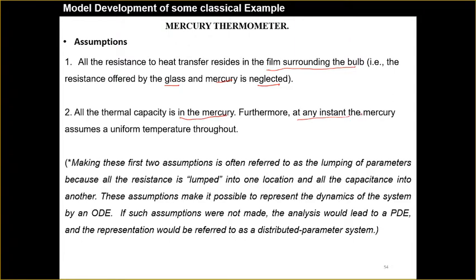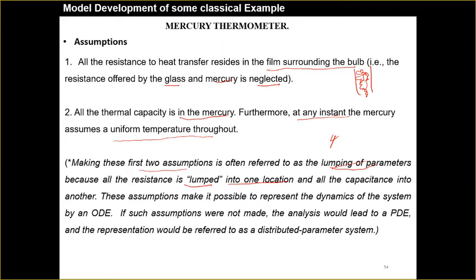Furthermore, at any instant the mercury assumes a uniform temperature throughout — meaning there is a uniform temperature distribution at every point in the volume. Making these first two assumptions is referred to as lumping of the parameters, giving a lumped parametric model, because all resistance is lumped into one location from the mercury, and all capacitance from another. These assumptions make it possible to represent the system dynamics by an ODE — ordinary differential equation.